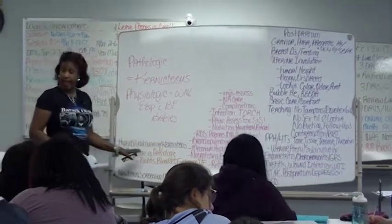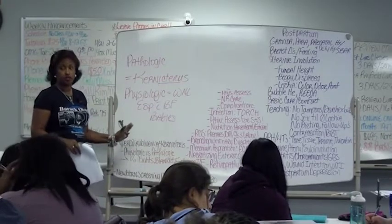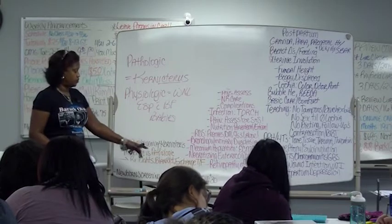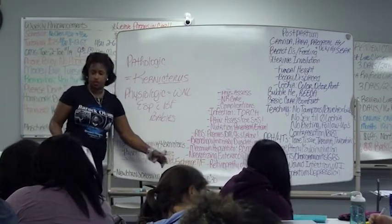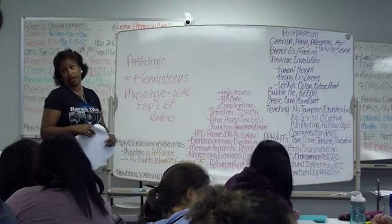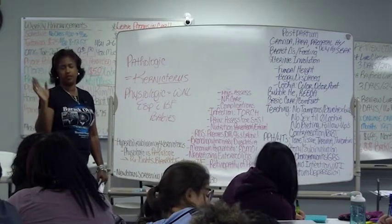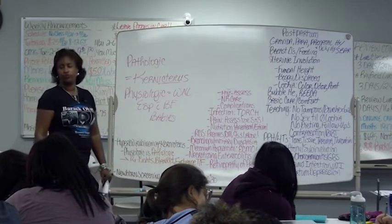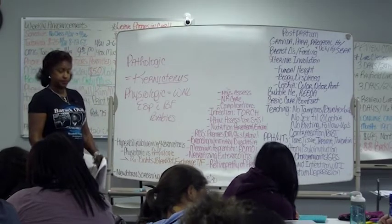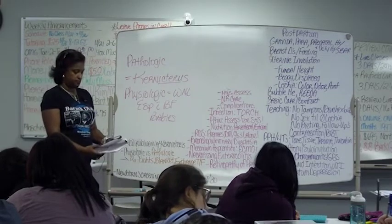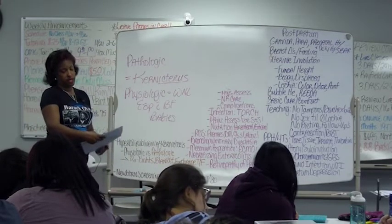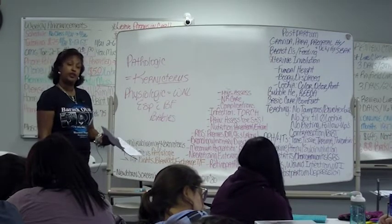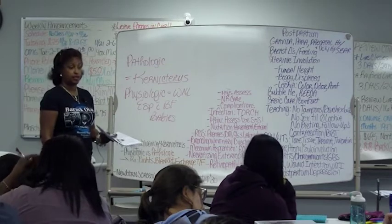If it's really bad and it happens within the first 24 hours and billy lights aren't going to do it, then we have to do an exchange transfusion where we take the baby's blood out, get the antibodies out — ABO incompatibility, Rh in some cases — and then give them back new blood, fresh blood without antibodies in it.